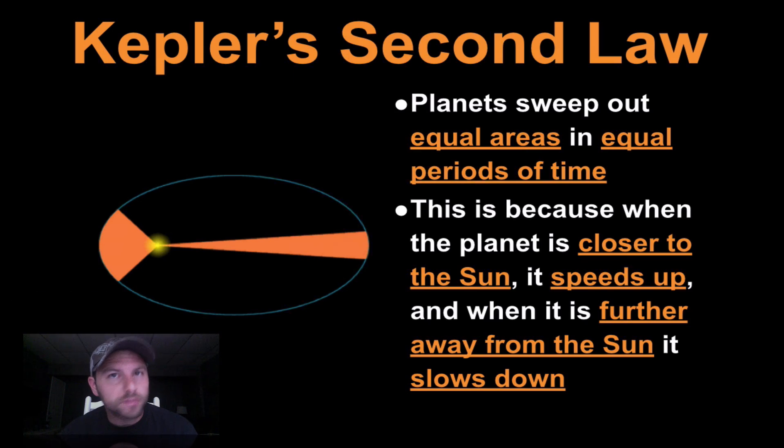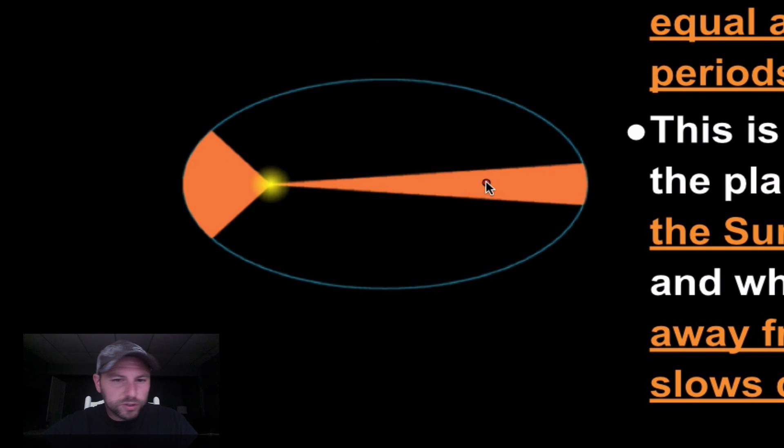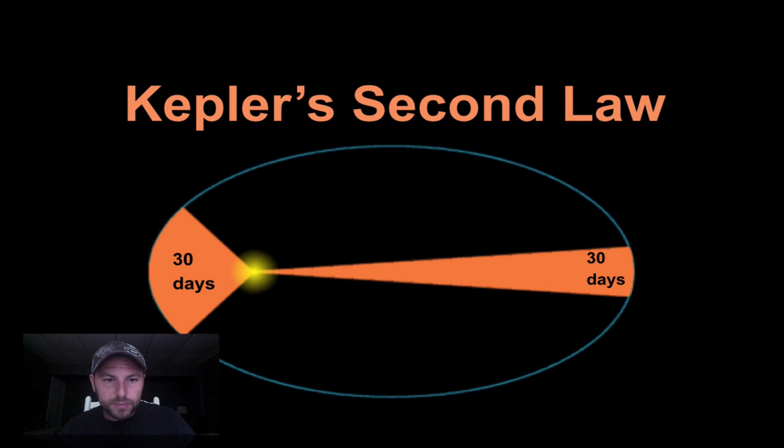Then we have Kepler's second law. Planets sweep out equal areas in equal periods of time. So if we were to calculate the area of this triangle, we'll just give it a number and say it's 100 units. This would also be 100 units. This is because as a planet's far away from the sun, it's moving slow. As it's close, it's moving fast. So what ends up happening is it moves fast here and it covers this area. But while it's far away it moves slow. A little bit different of a triangle, and the units end up being the same, or actually the areas end up being the same. So you can see it covers this area in 30 days and it covers here in 30 days. A little bit less ground, but the area of these two shapes are the same.